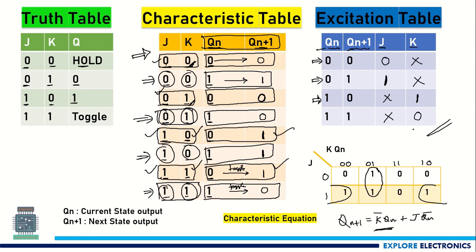This is the excitation table for JK flip-flop. This excitation table is very important in flip-flop applications. Let us remember this: for J it is 0, 1, X, X and for K it is X, X, 1, 0. If you remember it in this way, this is the shortcut.